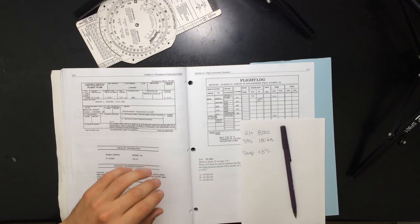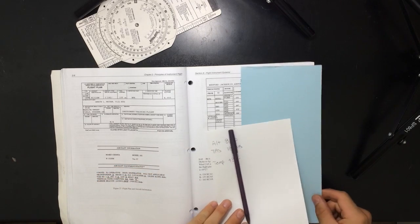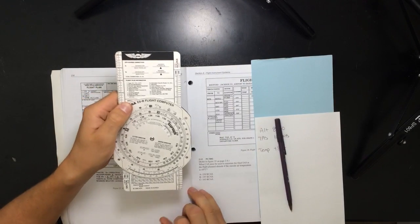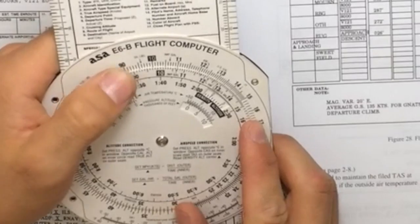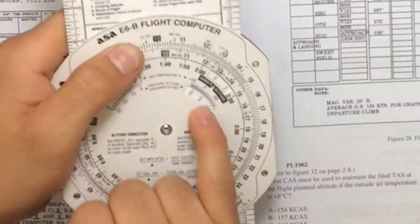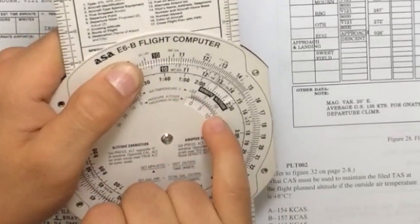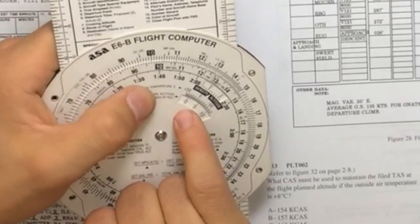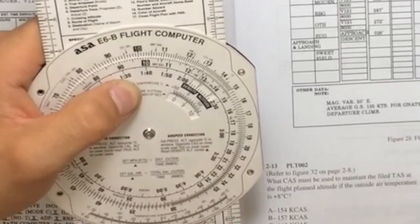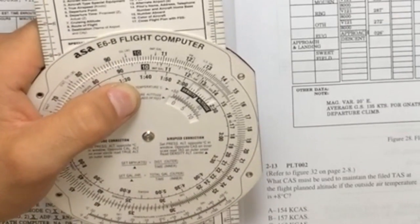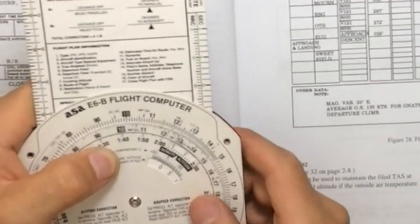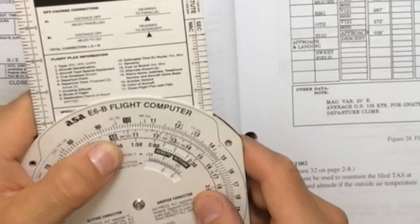So how we go ahead and calculate our calibrated airspeed here is we're going to pull up our E6B now. So what you want to do is you have your pressure altitude window here and right above it is the temperature. So what you want to do is you want to get your pressure altitude opposite of your temperature, so you want to line them up.